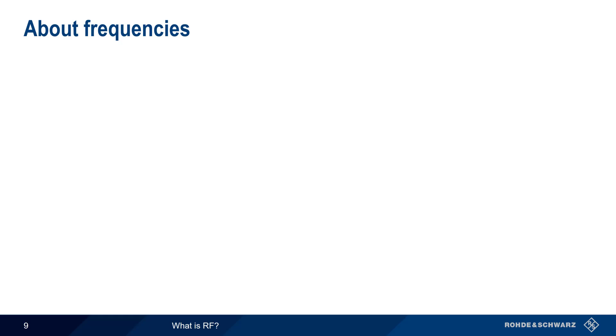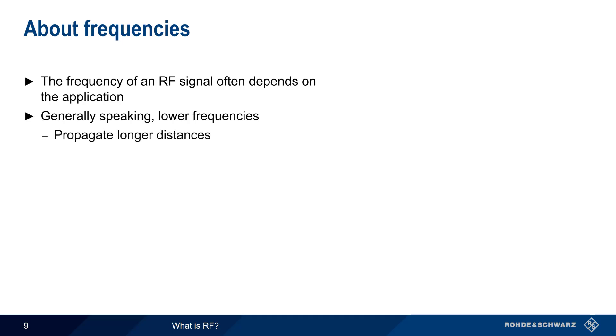The definition of RF covers a very wide range of frequencies, but the specific frequency used is largely based on the application. Generally speaking, two things happen as we lower the frequency. First, the radiated fields propagate or travel longer distances. Second, lower frequency signals also tend to penetrate or pass through objects more easily. The opposite is true for higher frequencies.